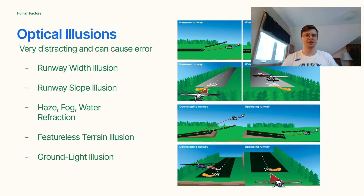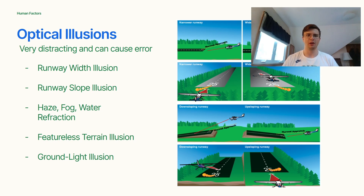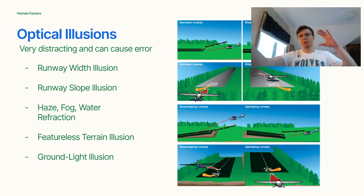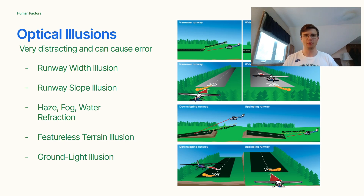For runway slope illusion: a downsloping or upsloping runway may cause you to fly an unstable, unsafe approach — rounding out too high or too low. Be aware whether your runway has a slope. For haze, fog, and water refraction: any water suspended in the atmosphere makes everything blurrier. Flying through haze is a good experience to have with an instructor safely. The runway may appear closer or further away, so be aware of how water on your windscreen or haze affects your ability to judge distances.